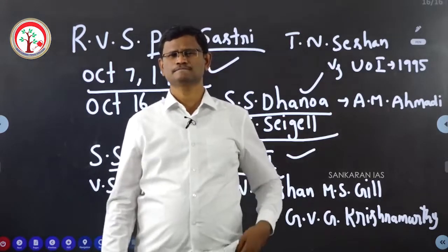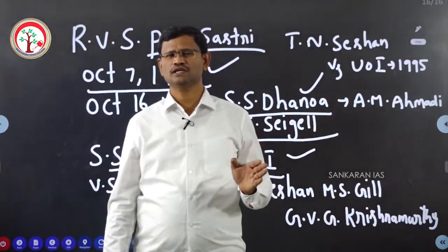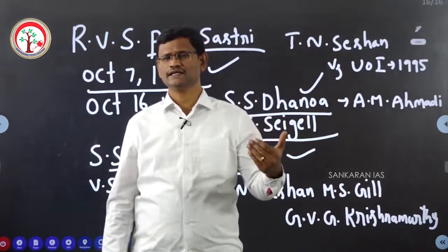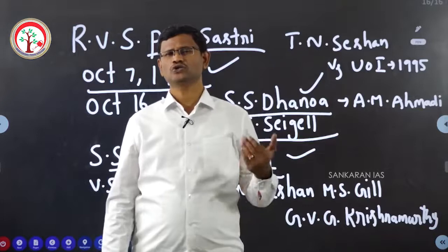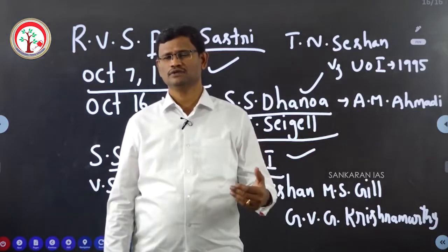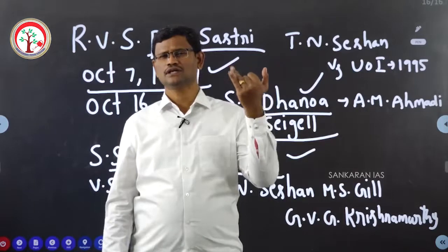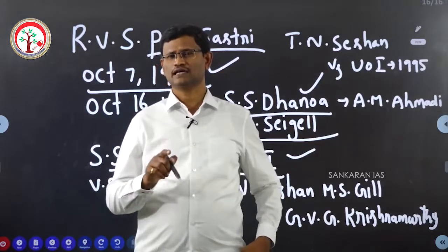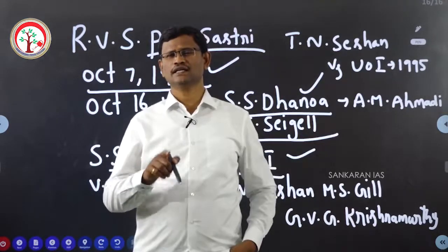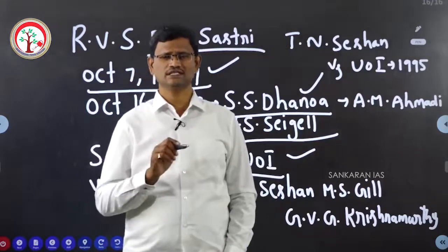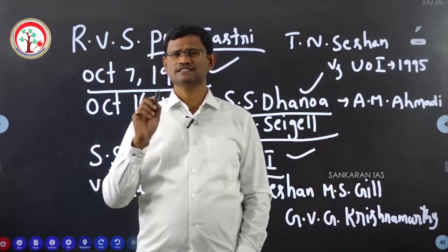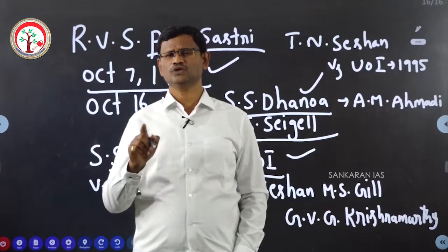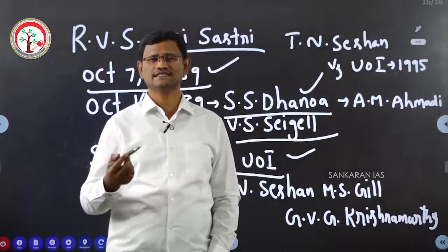Subsequently, the Election Commission of India continued as a single-member body for almost four years — from 16th October 1989 to October 2nd 1993. For almost four years, from October 16th 1989, after functioning for 70 days as a multi-member body, it continued as a single-member body till October 2nd 1993.